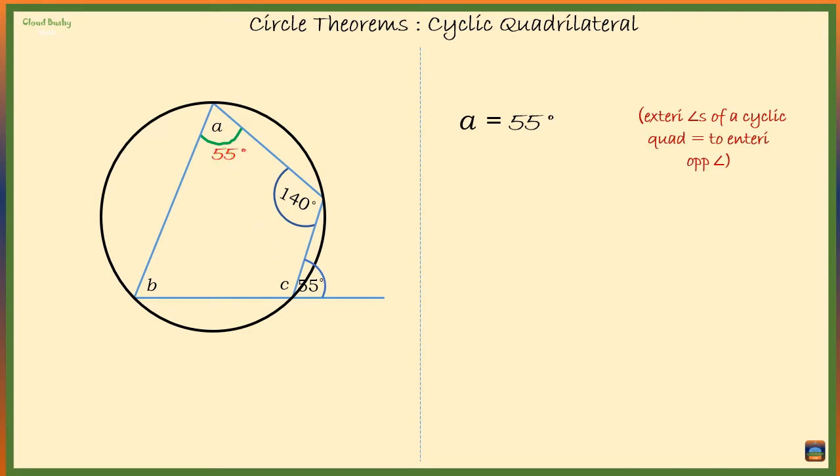Next, angle B. Angle B is equal to 180 degrees minus 140 degrees. This is because opposite angles of a cyclic quadrilateral are supplementary. That means they add up to 180 degrees. So angle B is equal to 40 degrees.